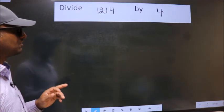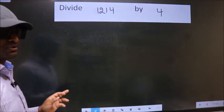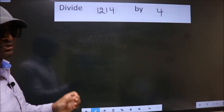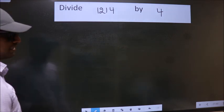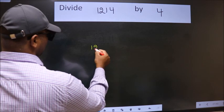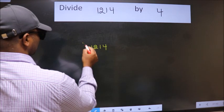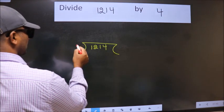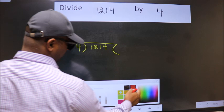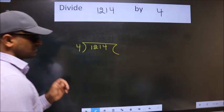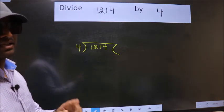Divide 1214 by 4. To do this division, we should frame it in this way: 1214 here, 4 here. This is your step 1.